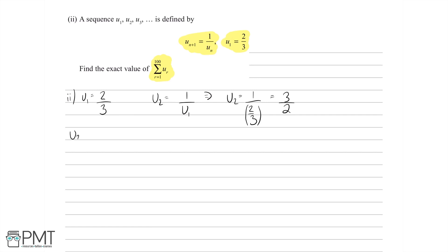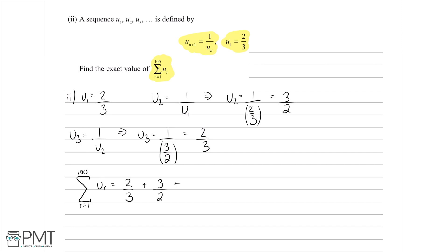u3 is 1 over u2 from the general formula, which means u3 is 1 over (3/2), which is 2/3. We can see that this pattern is definitely going to repeat indefinitely, which means the sum from r=1 to 100 of u_r is simply 2/3 plus 3/2 plus 2/3 plus 3/2 and so forth, for a total of 100 terms.